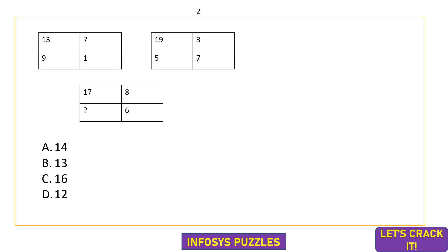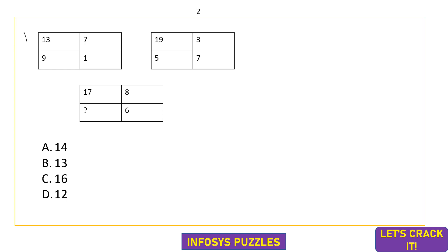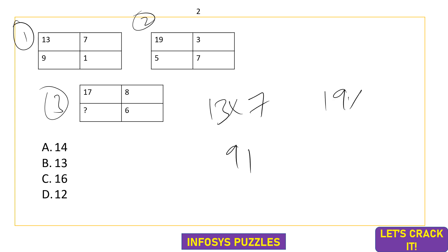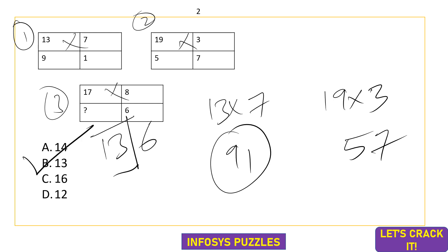Here comes the very first question. Try to pause the video and attempt it on your own. The same relation seen in the first two boxes is also seen in the third box. The logic: 13×7 = 91, and 19×3 = 57. Each digit is represented in a single box. So 17×8 = 136, meaning 13 is written in the first box. Option B is the correct answer.